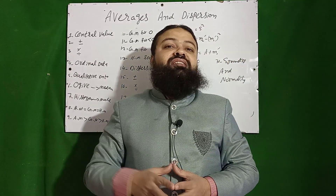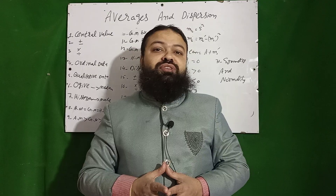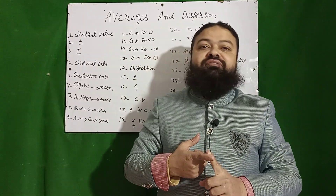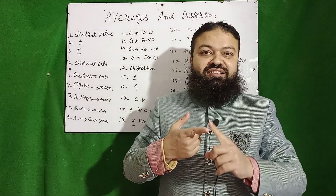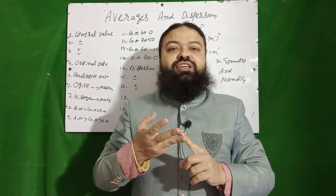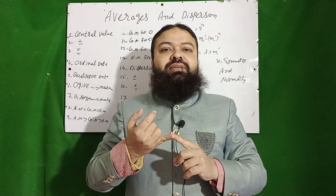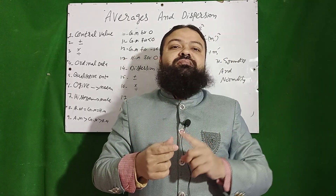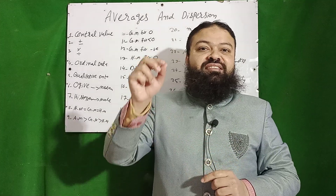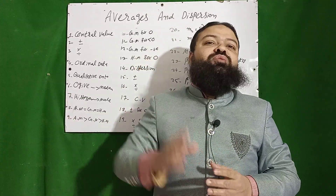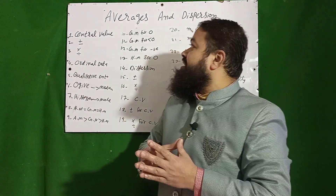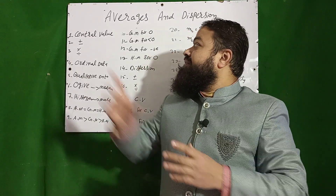Dear students, first of all I will tell you what is the measure of central value. Actually there are five averages: arithmetic mean, geometric mean, harmonic mean, median, and mode. They are used to represent the central value of the data. These all are very important.